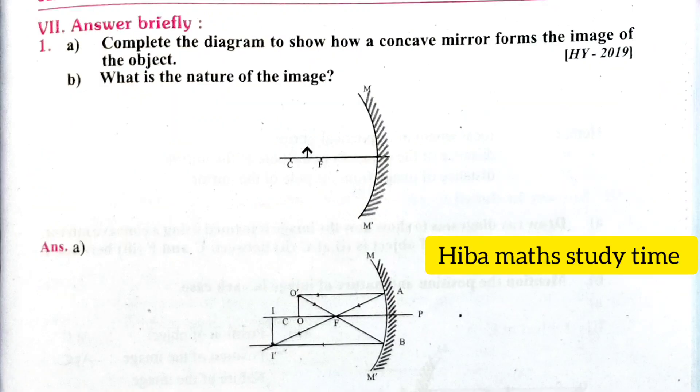First question: complete the diagram to show how a concave mirror forms the image of an object. Second: what is the nature of the image?